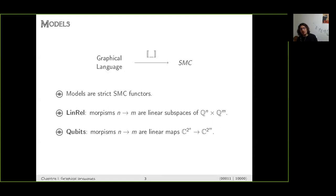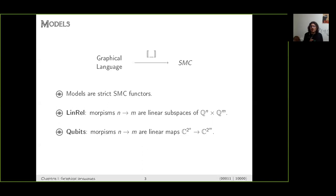We will see two categories. First, there is the category of linear relations, where a morphism from n to m is just a linear relation — you can see it as a linear subspace — and composition is the usual composition of relations, with tensor product being the direct product of vector spaces. Then the most important category is the category Qubits, where a morphism from n to m is a matrix of size 2^n times 2^m. Composition is the usual matrix product, and the tensor product is the tensor product of vector spaces, which is the Kronecker product of matrices. It's called Qubits because the one object here is C^2, the Hilbert space corresponding to a qubit.